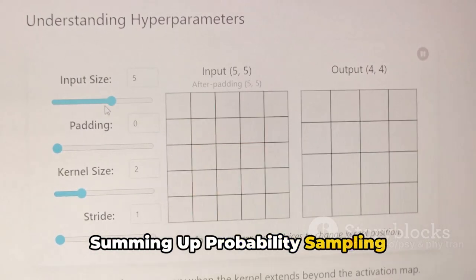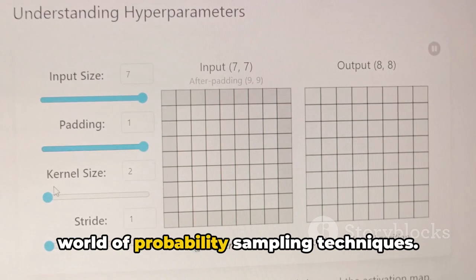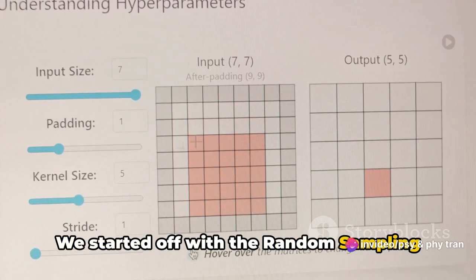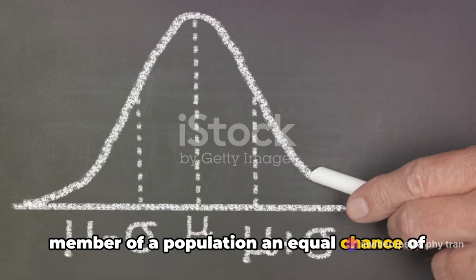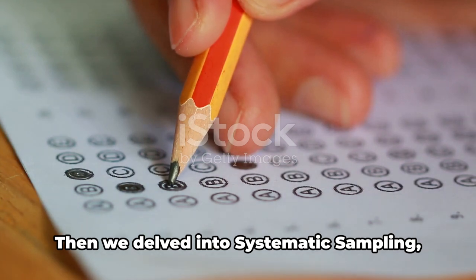Summing up probability sampling techniques. We've journeyed through the world of probability sampling techniques, it's time to recap. We started off with the random sampling technique, a method that gives every member of a population an equal chance of being selected. It's the fairest of all, but not always practical.